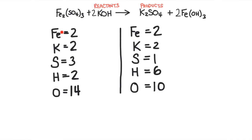The metals are now balanced. So now I can move on to the non-metals, leaving out hydrogen and oxygen. There's only one other non-metal — it's sulfur. There are three sulfur atoms on this side of the equation and just one sulfur atom on the other side. I'm going to change this coefficient to a three.